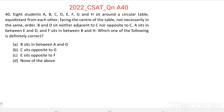B and D sit neither adjacent to C nor opposite to C. A sits in between E and D. F sits in between B and H. Which one of the following is definitely correct?